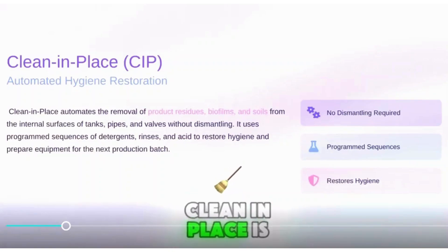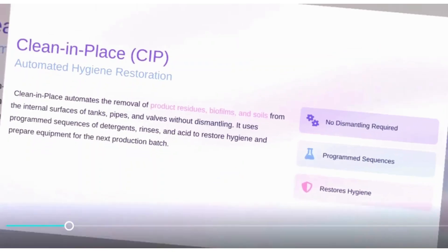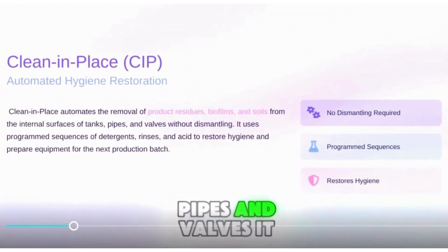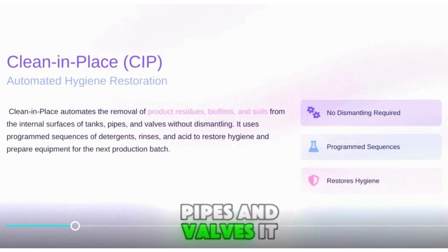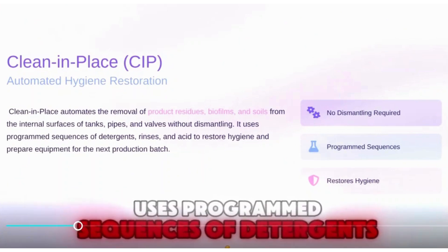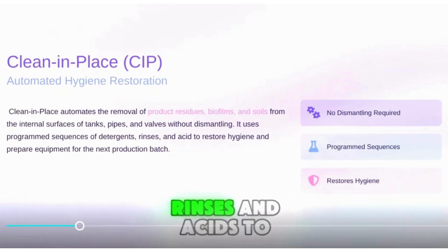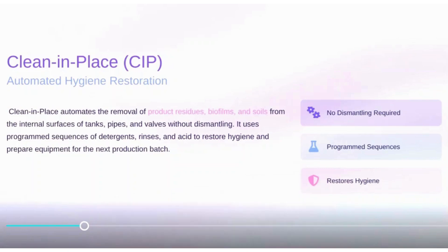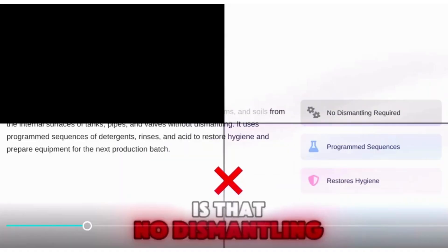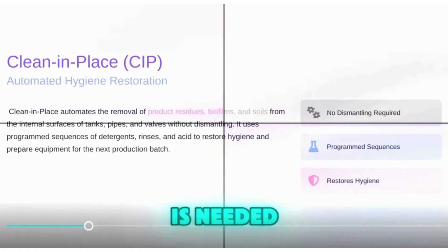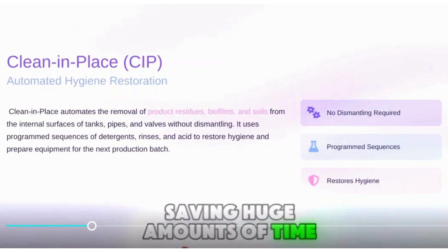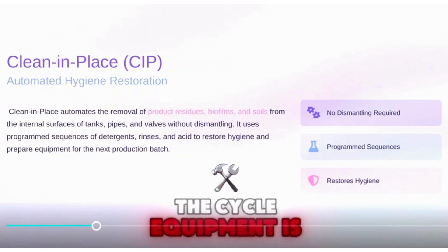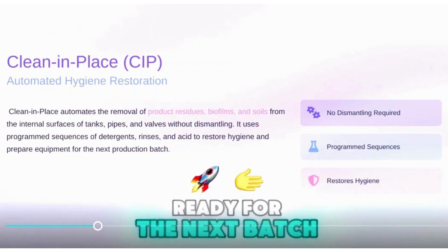Clean in Place is all about removing residues, soils, and biofilms from tanks, pipes, and valves. It uses programmed sequences of detergents, rinses, and acids to restore hygiene. The beauty of CIP is that no dismantling is needed, saving huge amounts of time. By the end of the cycle, equipment is ready for the next batch.